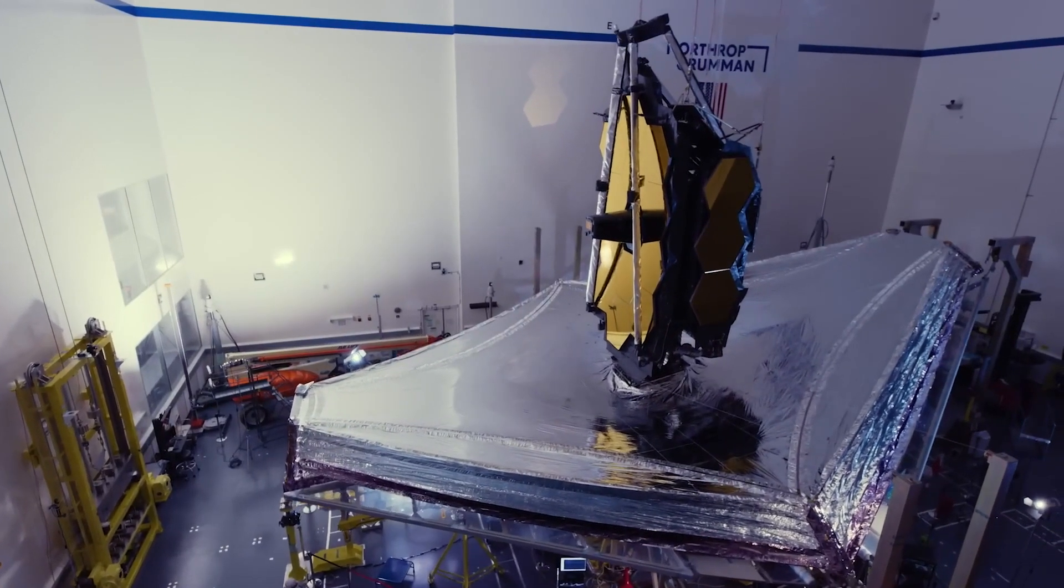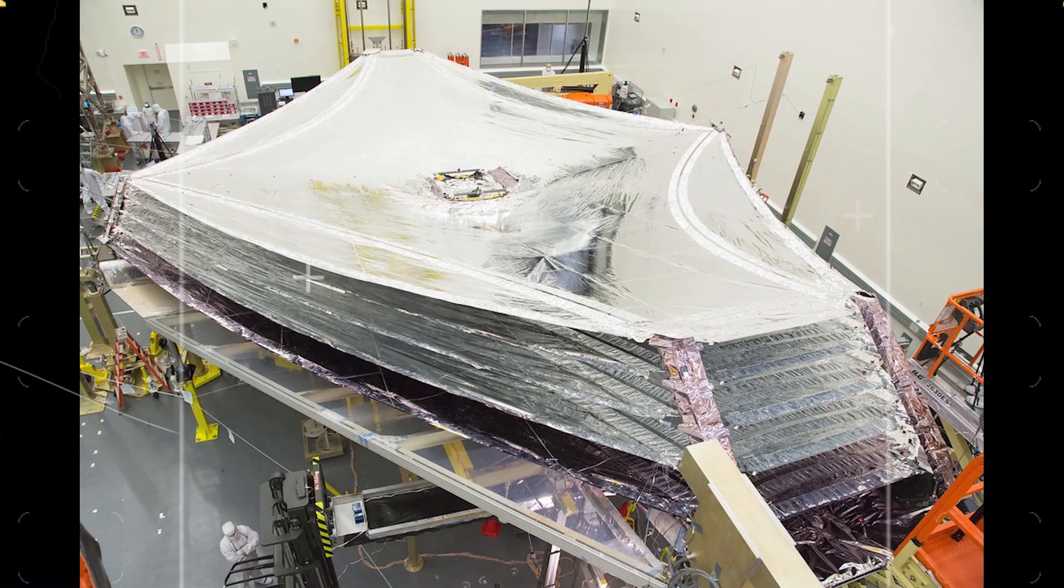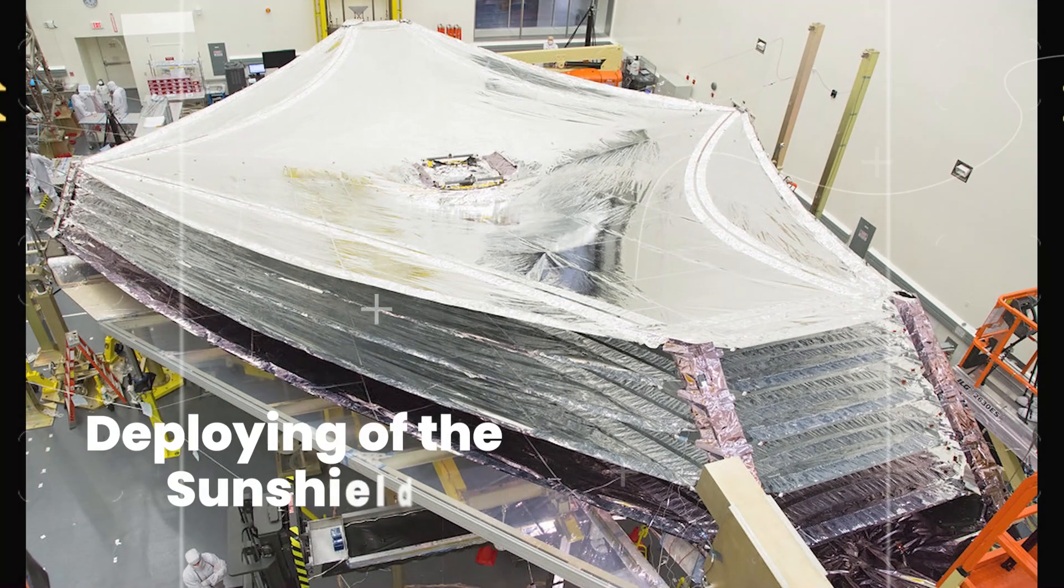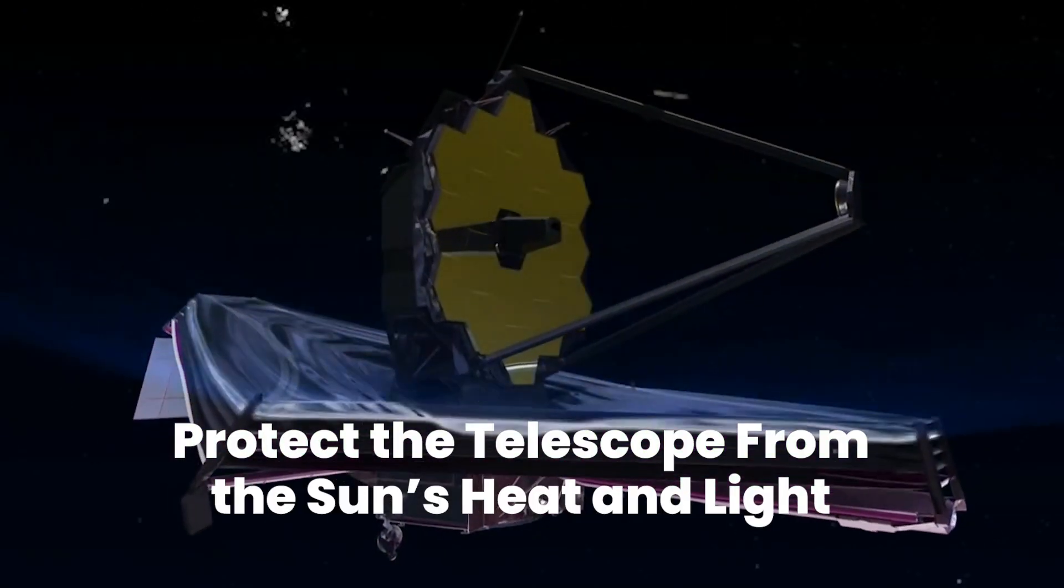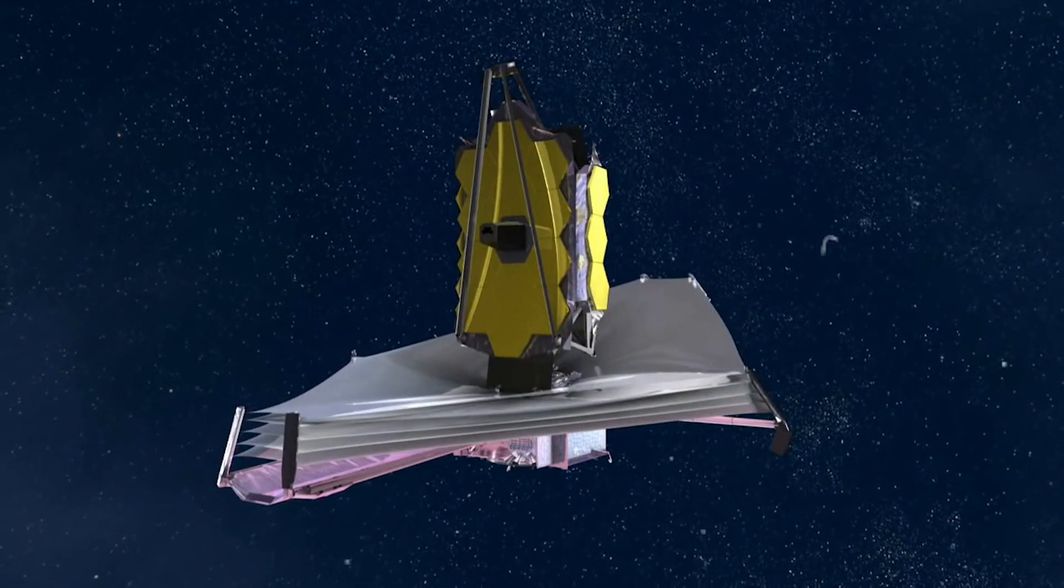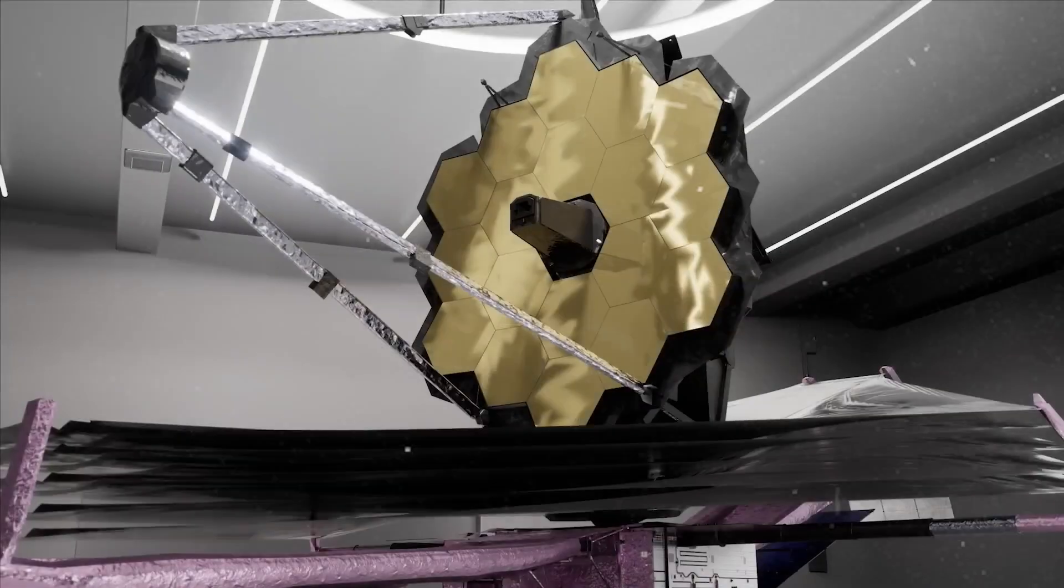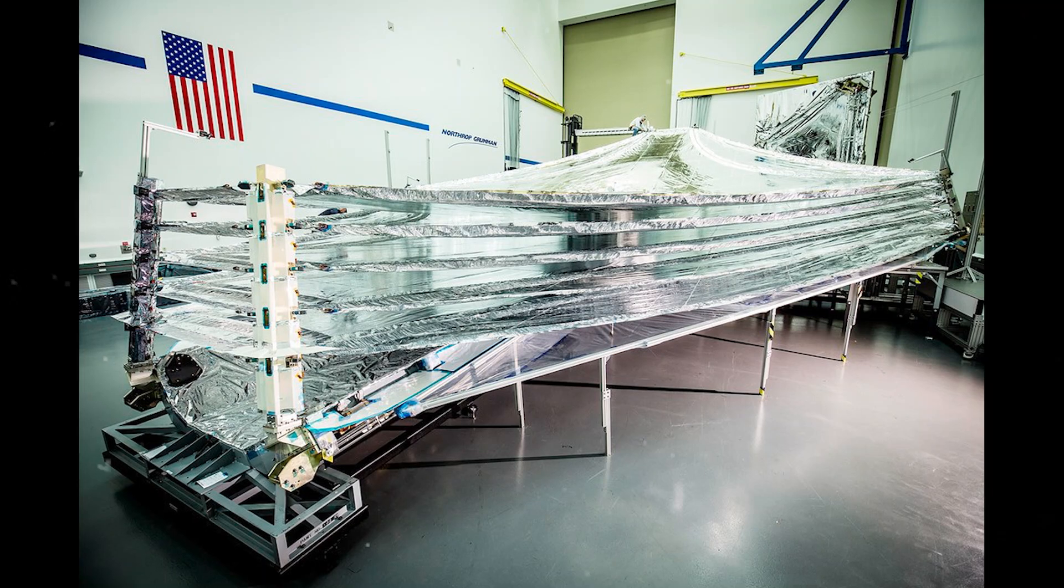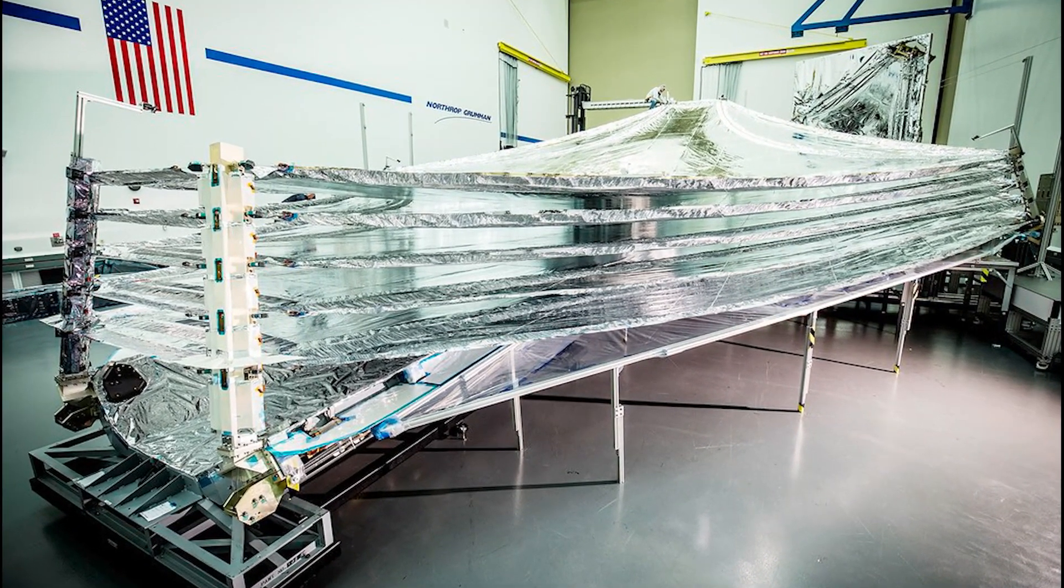Before commencing astronomical observations, the telescope underwent a series of critical science and calibration tests. One vital test involved deploying the Sunshield, a large five-layered membrane designed to protect the telescope's sensitive instruments from the Sun's heat and light. Precise unfolding was necessary to ensure each layer was correctly tensioned and aligned, as any misalignment could compromise the telescope's ability to observe distant objects.